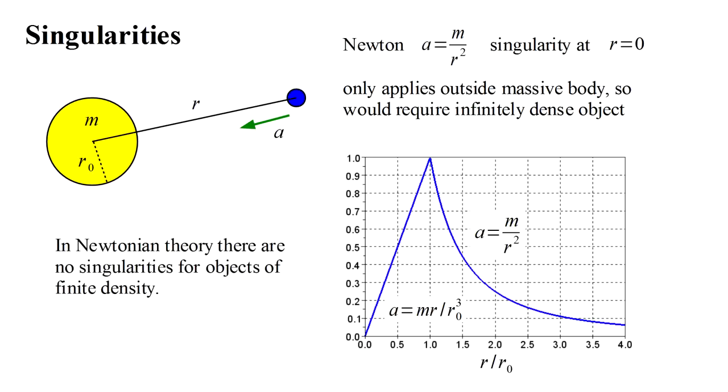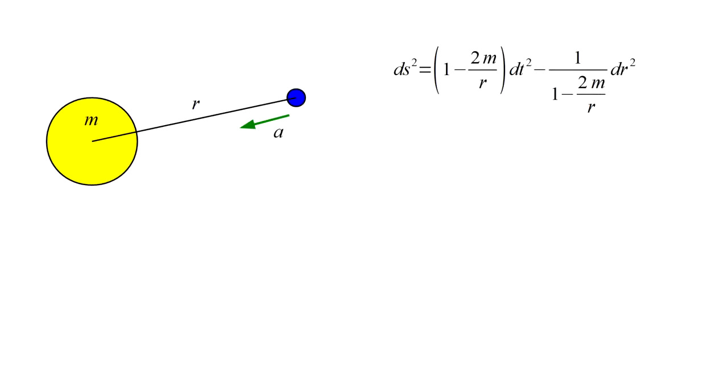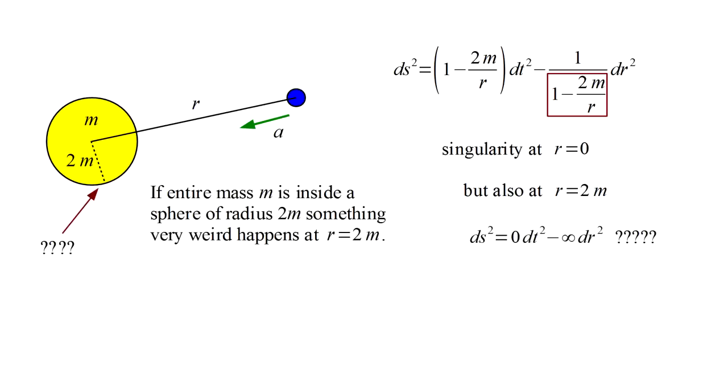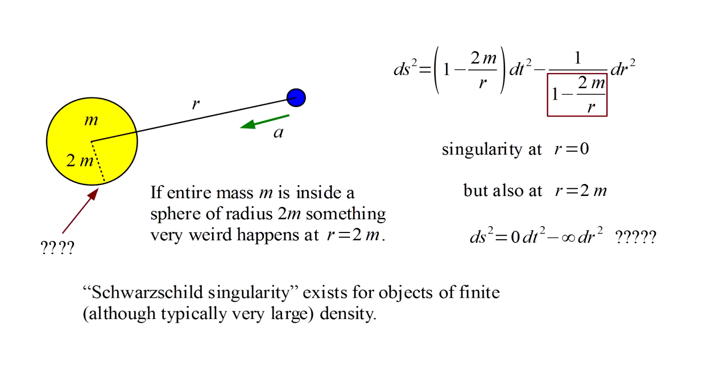The Schwarzschild solution has a singularity at r equals zero, which we might dismiss by the same reasoning. However, it also has a singularity at r equals two m, because there two m over r equals one, one minus one equals zero, and one over zero is infinity. This singularity only requires the mass m to be compressed into a sphere of radius two m, not zero, thus resulting in a finite density. So it seems possible to have an object of finite density produce a physical singularity.